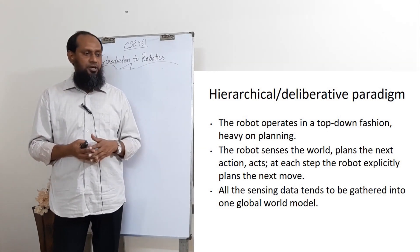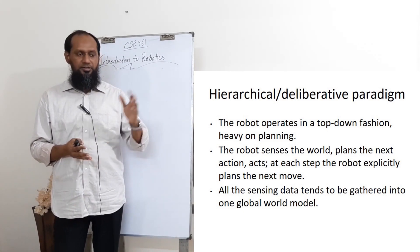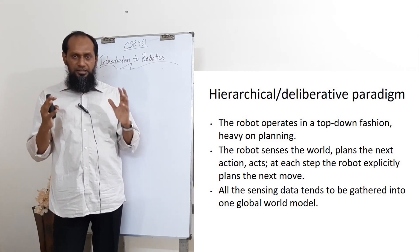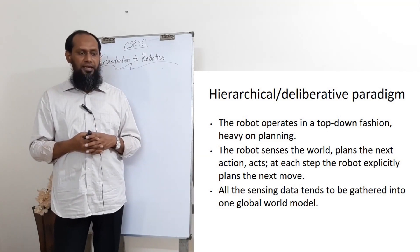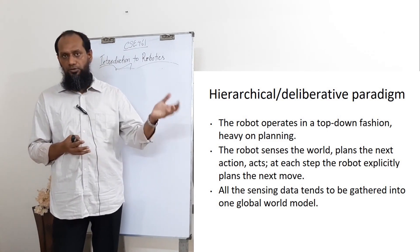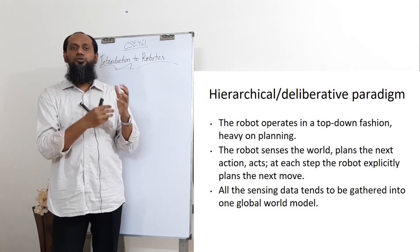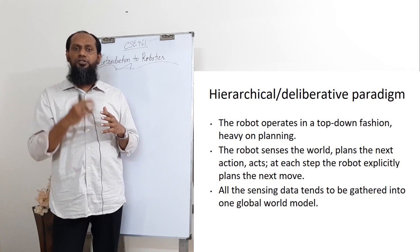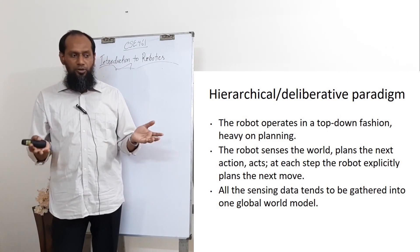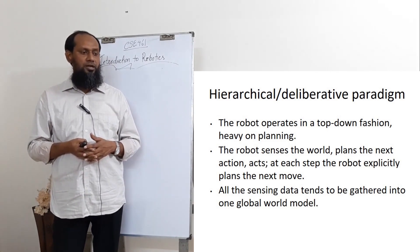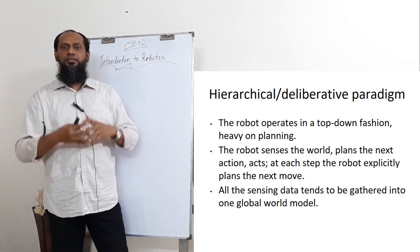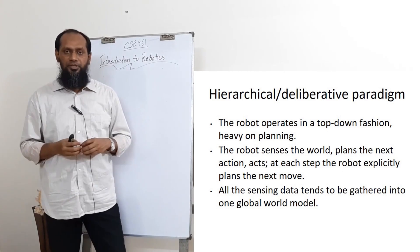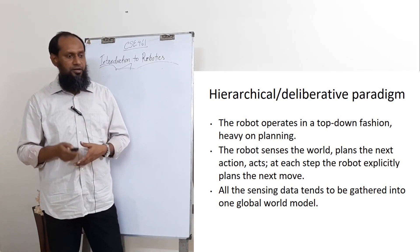The description of the hierarchical paradigm: the robot operates in a top-down vision, heavy on planning. Sense, plan, act — the planning algorithm is very critical. The robot senses the world, plans the next action, and then acts. At each step, the robot explicitly plans the next move, which requires huge processing, making it slow. All the sensing data tends to be gathered into one global world model, so it has to process a huge amount of data. That is the concept of the hierarchical paradigm.